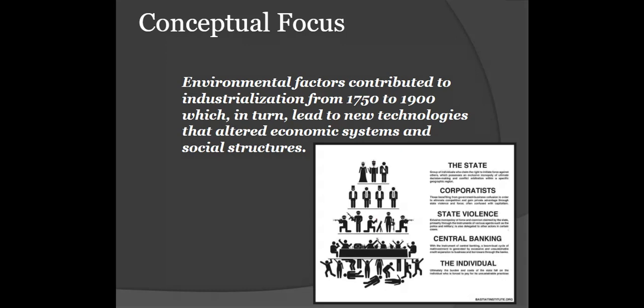It's been very helpful for us to think about historical events in terms of key concepts and big ideas. So while the objectives will lead you through some of the various content points, let's try to create a conceptual focus to help us map out the Industrial Revolution and how it fits in both to the broader aspects of Unit 5, but also the story of modern human history. We're going to take a look at how environmental factors contributed to industrialization from 1750 to 1900.